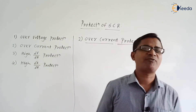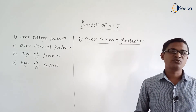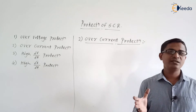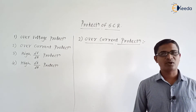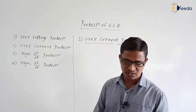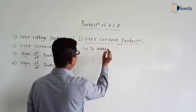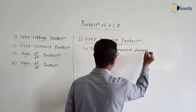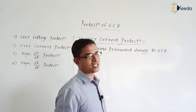Why is over current protection required for SCR? When high current flows through the SCR, it causes high power loss, and due to that, more heat is generated. Due to that heat, the SCR will get permanently damaged. So, in order to avoid permanent damage to the SCR, we need to protect it against over current.